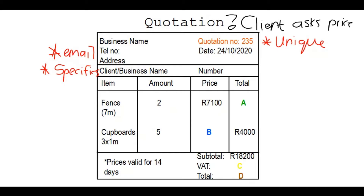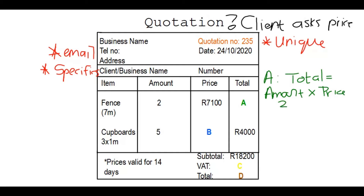For the fencing, the price is seven thousand one hundred rand and he bought two. We need to calculate the total price, which is the amount multiplied by the price per unit. In our case the amount is two and the price is seven thousand one hundred, giving us fourteen thousand two hundred. Let me write that in for A.